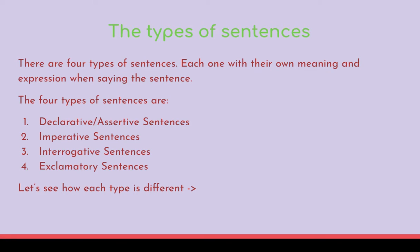The four types of sentences are: declarative or assertive sentences — declarative and assertive are the same — imperative sentences, interrogative sentences, and exclamatory sentences. Now let's see how each type is different.